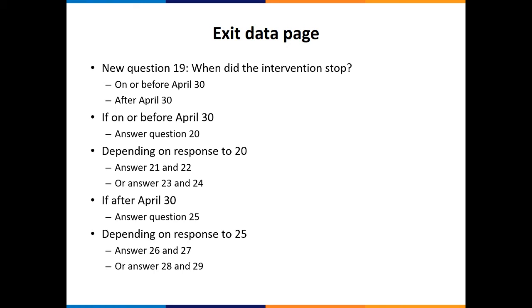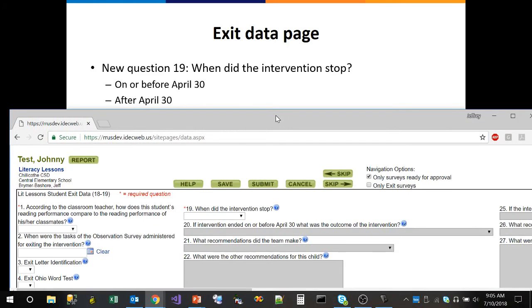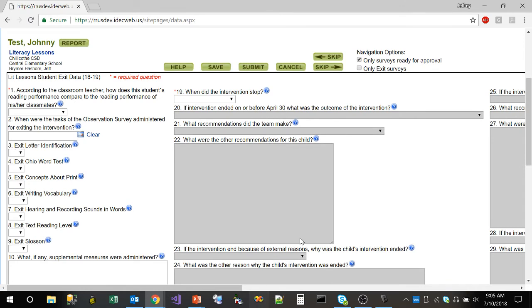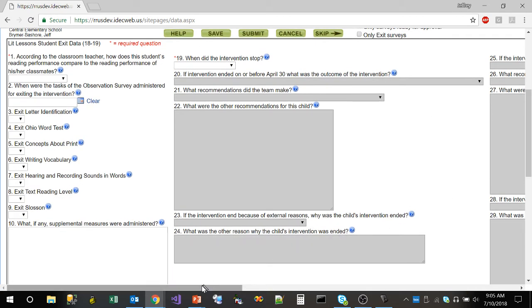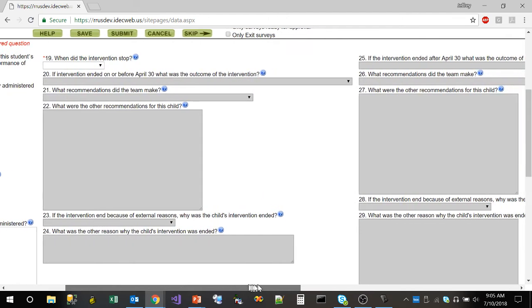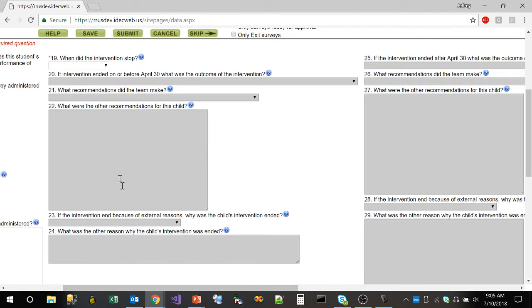And then just depending on their response to number 25, teachers may have to answer questions 26 and 27 or questions 28 and 29. So let's take a quick look at what that looks like on the website. I'm going to bring it over here. So here we go. Here is a new copy of the exit data page. I'm going to try to center things on the screen here. I'm going to move this over. So here is our new question 19. When did the intervention stop? So like I said, if we select on or before April 30th,